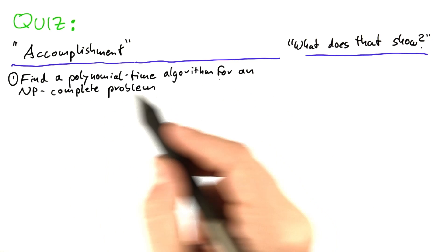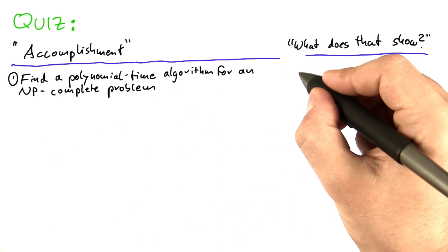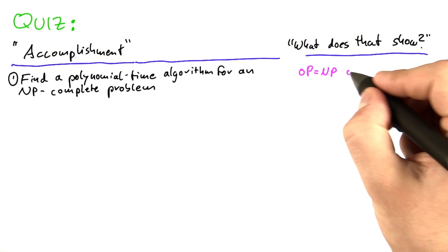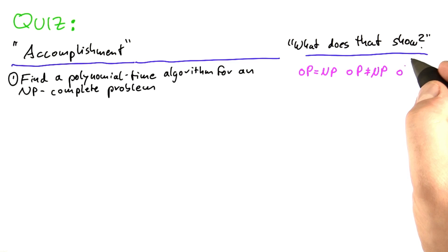For example, if you found a polynomial time algorithm for an NP-complete problem, would that show that P equals NP? Would that show that P does not equal NP? Or would that show nothing interesting?